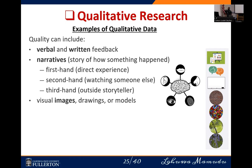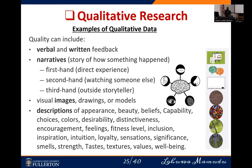Then we have visual images — the first thing that comes to mind is X-ray. You might go for a mammogram scan or others. These are examples of visual images, which are a type of qualitative data. Then there are other descriptors like appearance, beauty, belief, capabilities, choices, color, disability, feelings, fitness level, significance, smell, and strength — all examples of qualitative data.